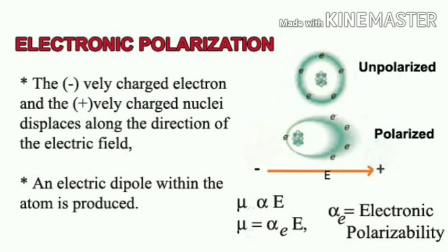When a molecule is placed in an electric field, the negatively charged electrons and the positively charged nuclei displace along the direction of the electric field. The dipole moment is directly proportional to the magnitude of the field strength: mu = alpha_E × E, where alpha_E is called the electronic polarizability. This kind of polarization is mostly exhibited in monoatomic gases.